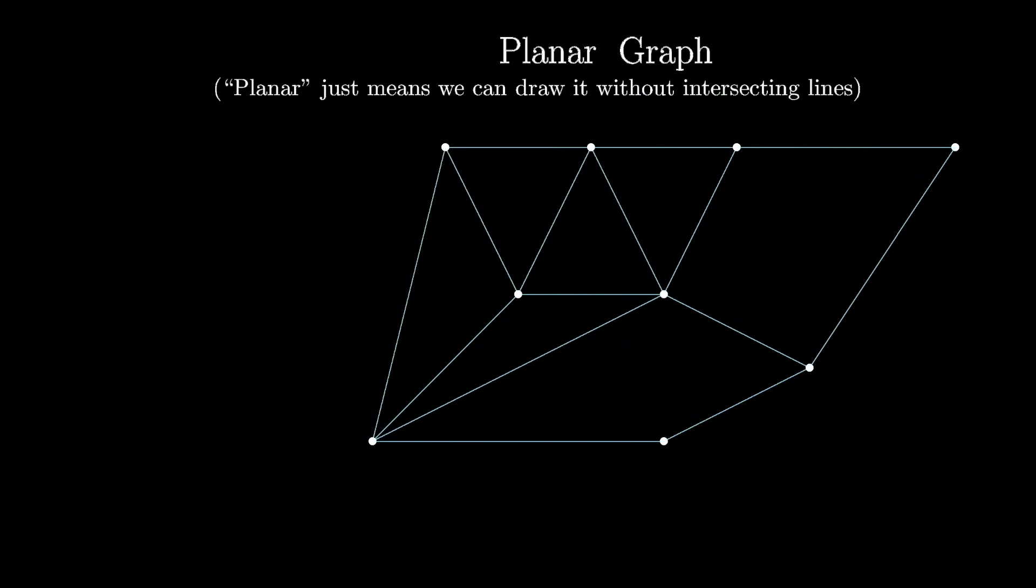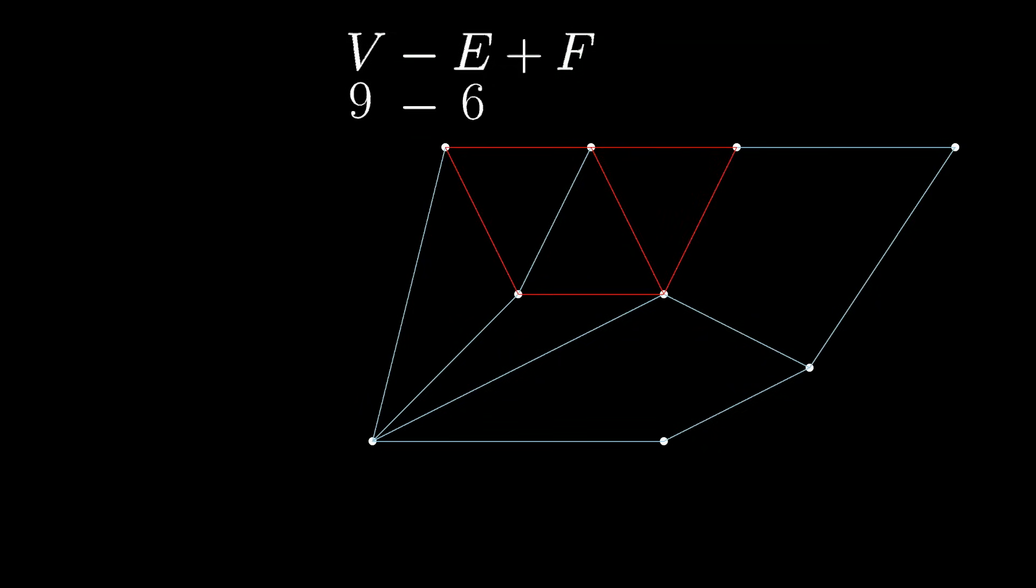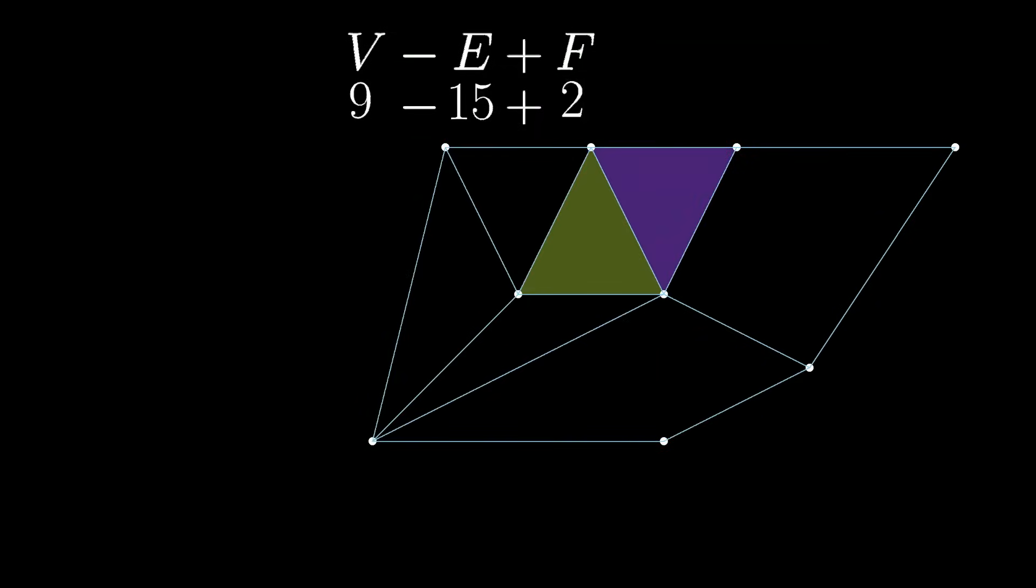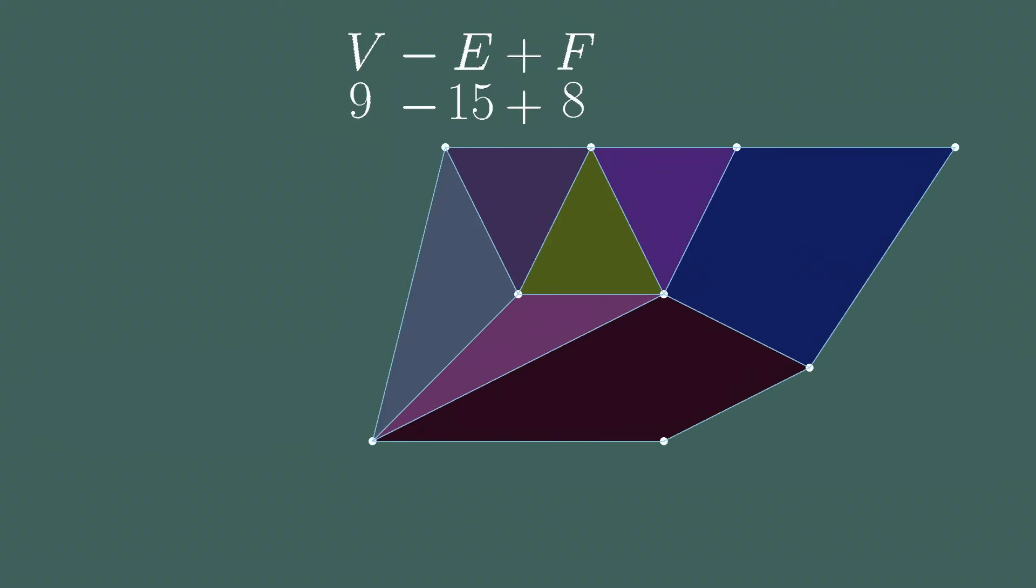which is to say you have a planar graph, and if your drawing is connected, then Euler's formula tells us that the number of dots minus the number of lines plus the number of regions these lines cut the plane into, including that outer region, will always be two.